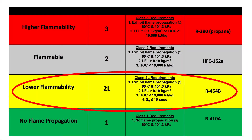Going back to the ASHRAE Standard 34 definition, we're really focusing on the A2L class — the lower flammability refrigerants. They're not non-flammable class one, but they're not class three either, where we have the hydrocarbons like butane and propane — the highly flammable refrigerants. It used to be called mildly flammable, but we're moving away from that language. Lower flammability refrigerants is where we want to focus.